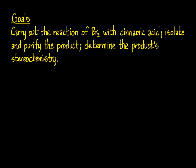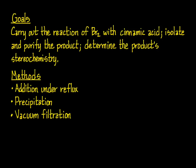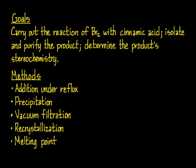The goals of this experiment are to carry out the bromination of transcinnamic acid, to isolate and purify the product, and determine the product's stereochemistry. To do this, you'll carry out the bromination using an apparatus equipped for addition of bromine under reflux. You'll need to precipitate the product from water, isolate it by vacuum filtration, then purify it by recrystallization. Finally, by measuring its melting point, you can determine if the product is the erythro or the threo isomer, or a mixture of the two.